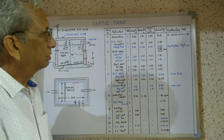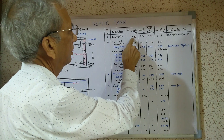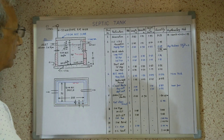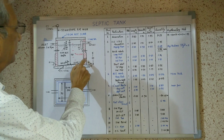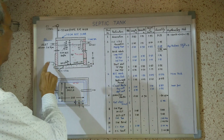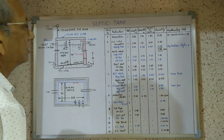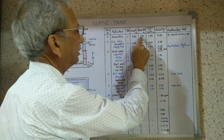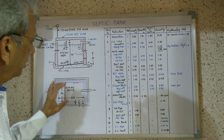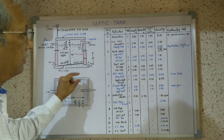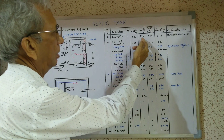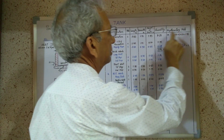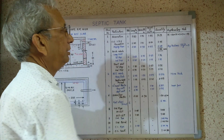Length: internal size 2 meters plus 30 cm this side plus 30 cm this side plus 10 cm plus 10 cm, giving 2.80 meters. Similarly, width: 90 cm plus 40 cm plus 40 cm equals 1.70 meters. Depth is 1.95 meters as calculated, giving a total quantity of 9.28 cubic meters.